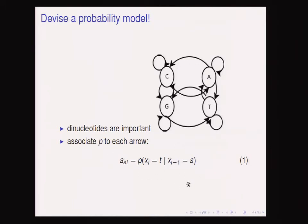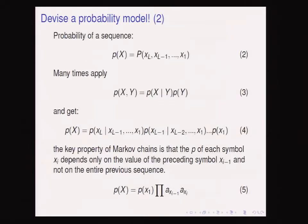There is a one-to-one correspondence between the state and the observed symbol: if symbol C is observed, the system is in state C. The observed sequence is comprised of symbols x_1, x_2, ..., x_L, where L stands for last or length. We can rewrite the probability of the sequence as conditional probabilities for each symbol given all preceding symbols.